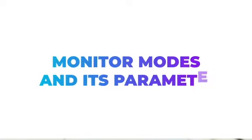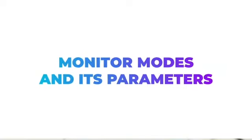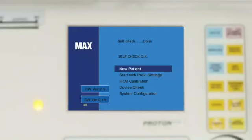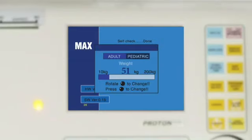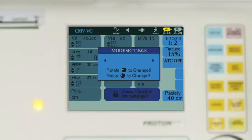Monitor modes and parameters: When new patient is selected, the system offers two options - adult or pediatric. Then weight of the patient is to be entered. Further, select the mode for invasive or non-invasive ventilation from 14 modes available.